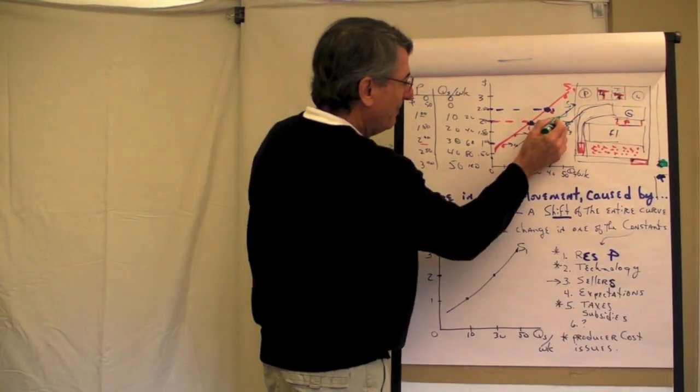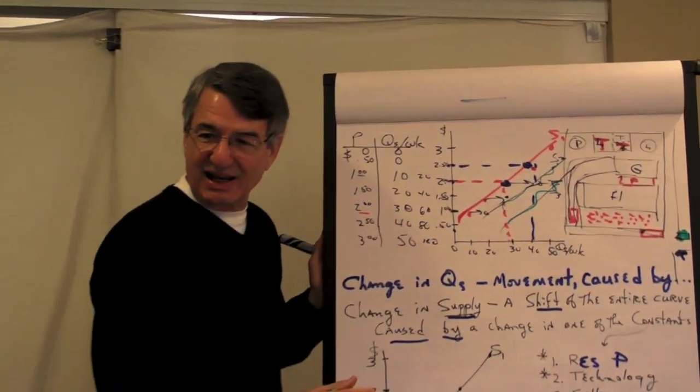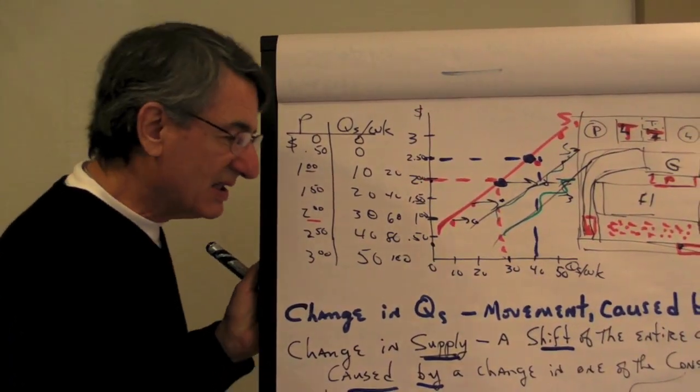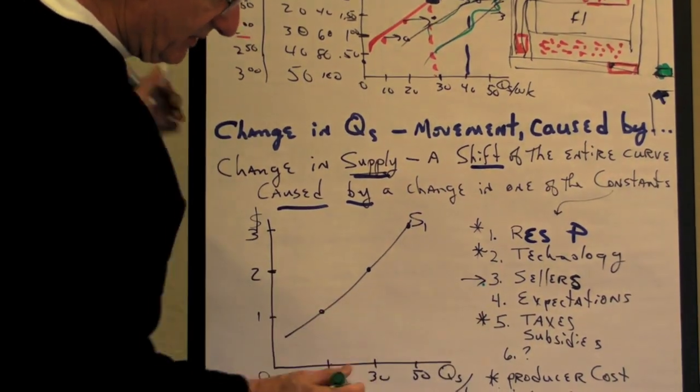So, boom, gone. Supply shifts left. Am I making the money again? So what caused the shift? Something, a change in something besides price. The number of sellers.